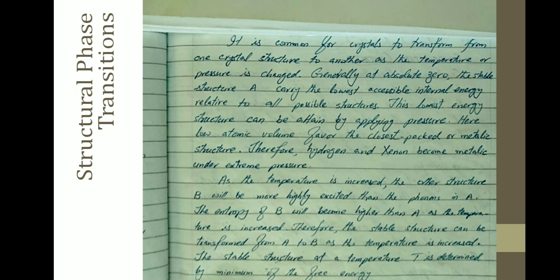It is common for crystals to transform from one crystal structure to another as the temperature or pressure is changed. Generally at absolute zero, the stable structure carries the lowest accessible internal energy relative to all possible structures. This lowest energy structure can be obtained by applying pressure. Lower atomic volume favors the closest packed metallic structure. Therefore, hydrogen and xenon become metallic under extreme pressure. When we decrease temperature or increase pressure, the material phase transforms to another structure which carries low atomic energy.